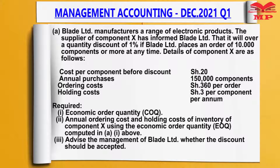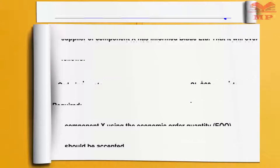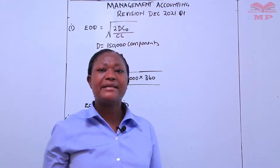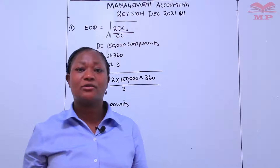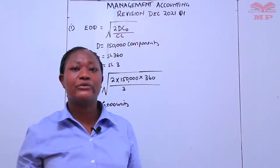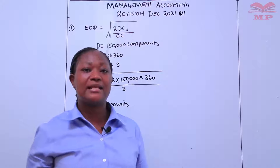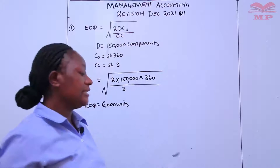We are asked to calculate the annual ordering cost and holding cost of inventory of component X using the economic order quantity, which is the EOQ computed in part one above. The main relevant costs in computation of EOQ are the ordering cost and the holding cost.